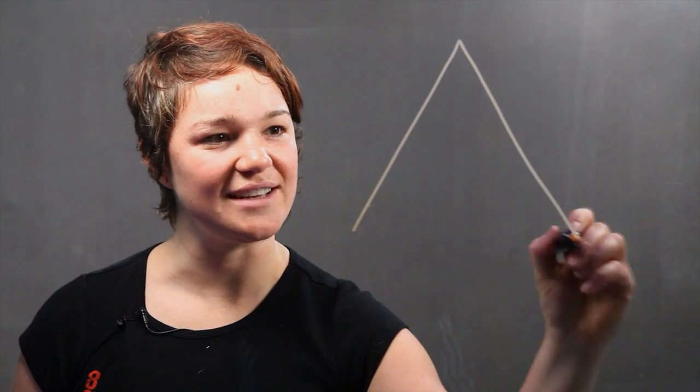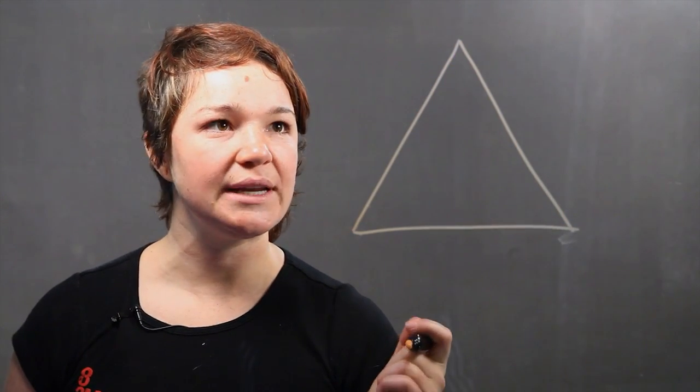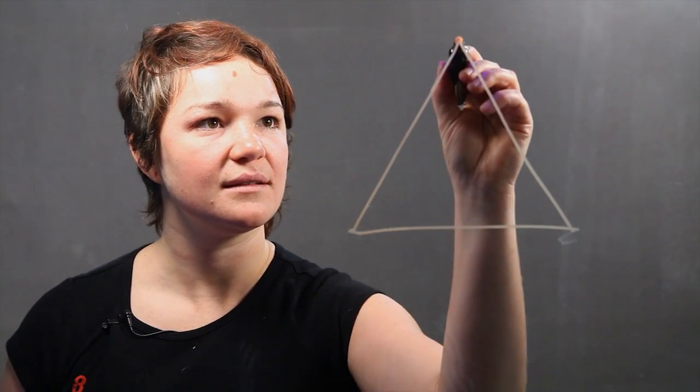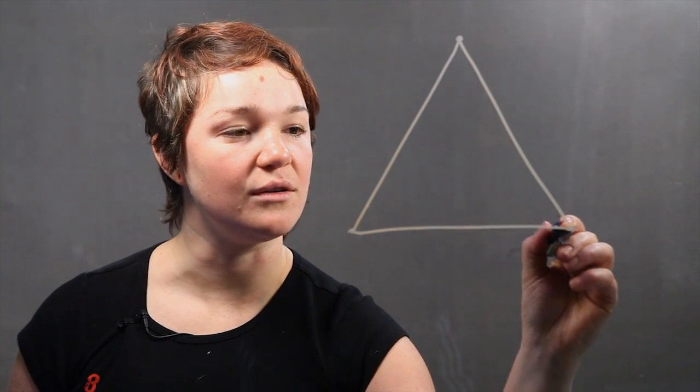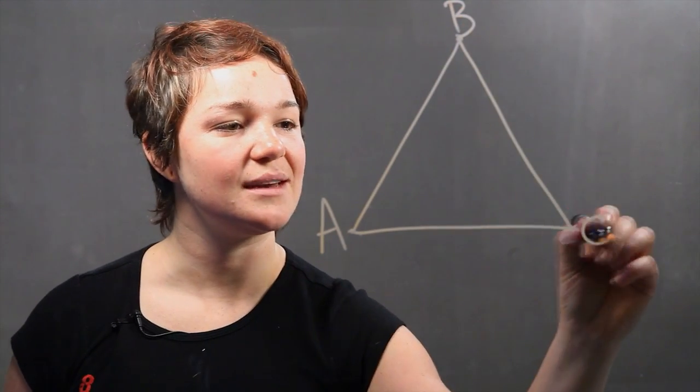So let's draw a triangle first. Here we have a nice orange triangle with three angles, of course, and we're going to name the points or the angles. We're going to name them A, B, and C.